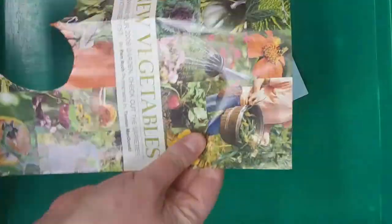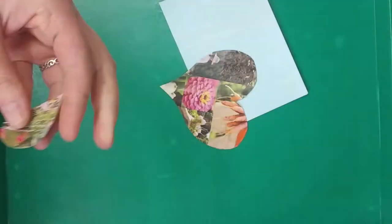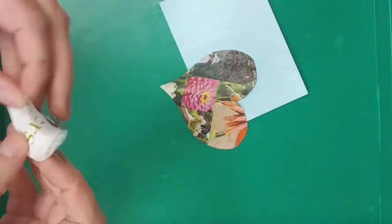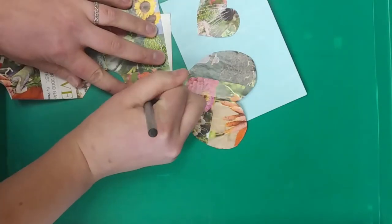If you have a heart-shaped cookie cutter, that makes a good template. Otherwise you can draw just a C shape on a folded piece of paper so that it's symmetrical, because that's the most important part is symmetry to make a good-looking heart.